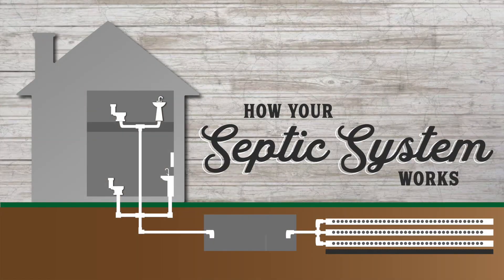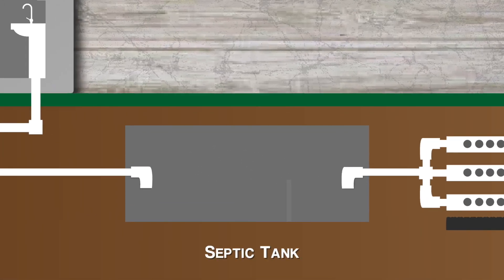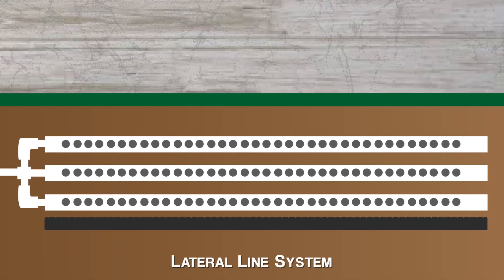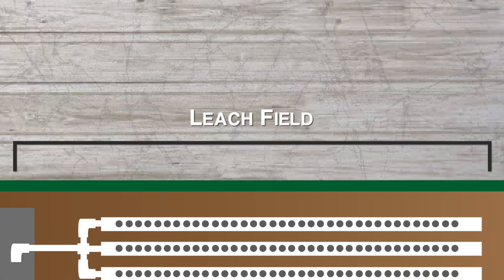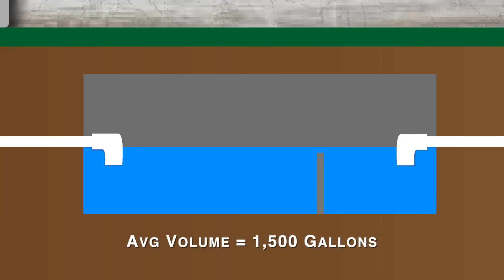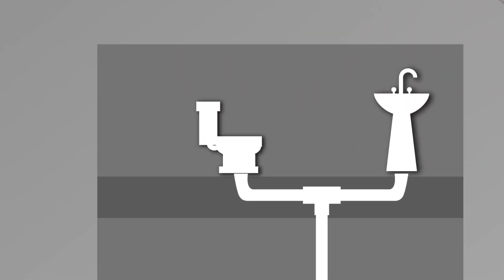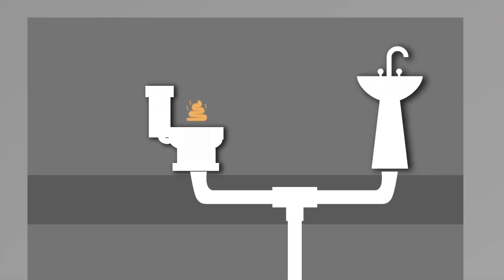A septic system is fairly simple in design. It normally consists of a septic tank, a lateral line system, and a leach field. The septic tank itself is generally made of concrete and holds an average volume of about 1,500 gallons. This tank is the first stop for your waste once it leaves your home through something like a toilet flush or down a drain.